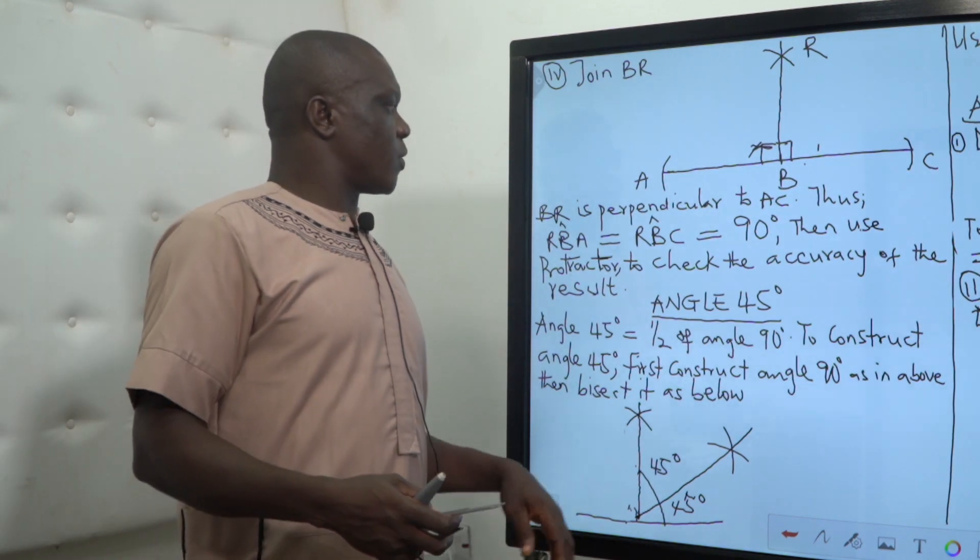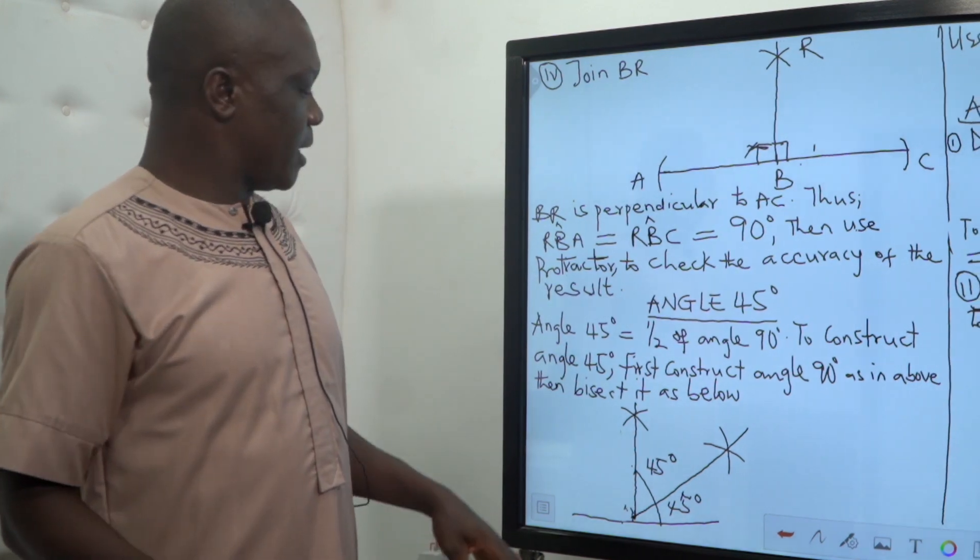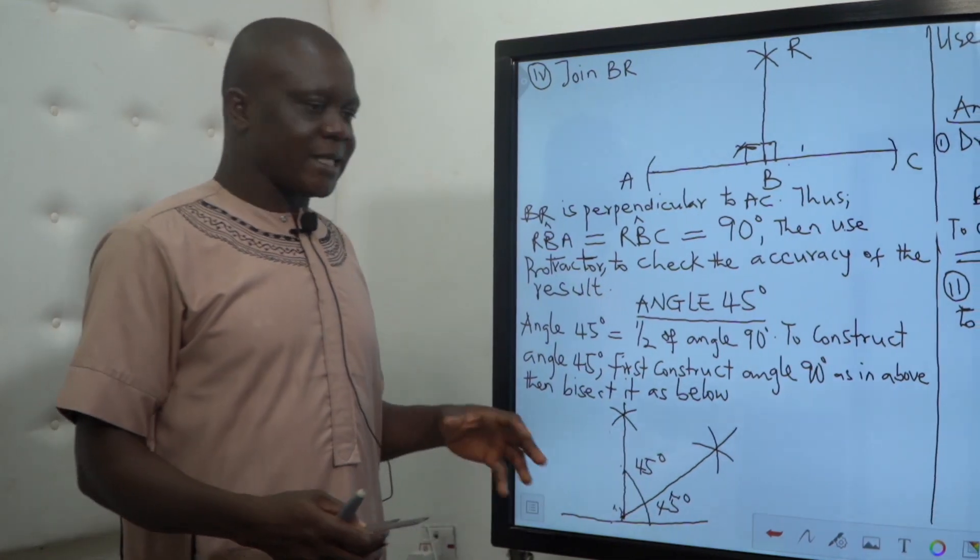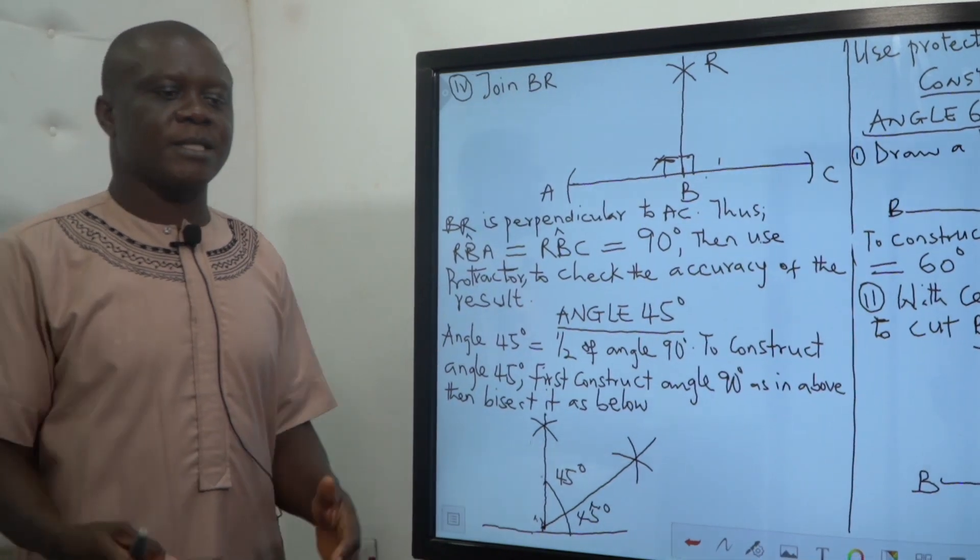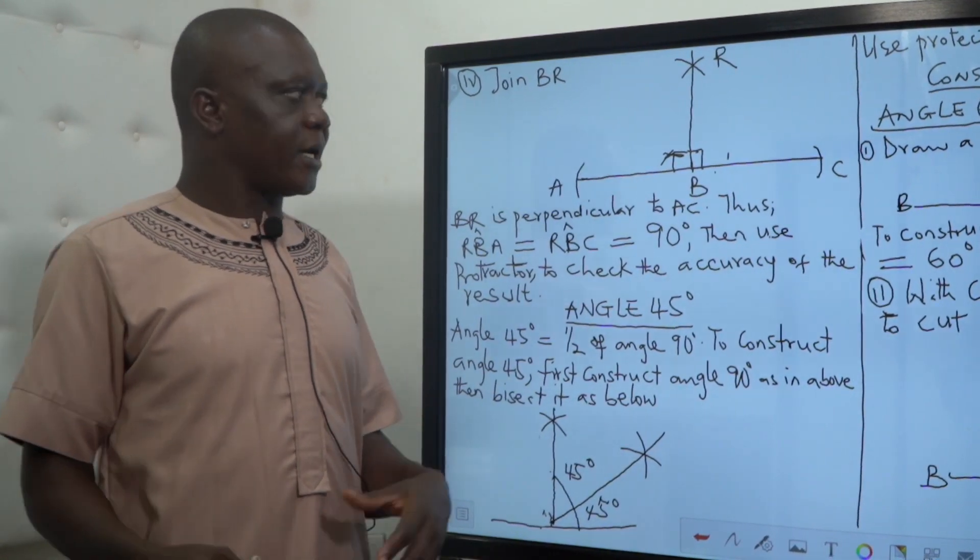And what it means is that you have divided the 90 into two equal parts. But in a construction section, we normally use a technical word bisect, which means bisection is the same thing as division.